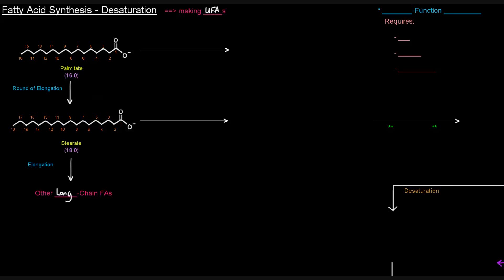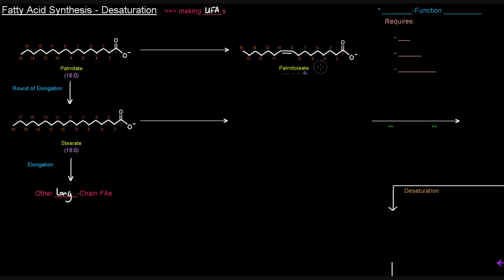So how can this happen? What we can do is take palmitate and get a double bond put into it. This is palmitate, and palmitoleate is palmitate with one degree of unsaturation. Specifically, that double bond is noted as delta-9, which means the double bond begins at carbon 9 and goes to 10, and it is drawn as a cis double bond.